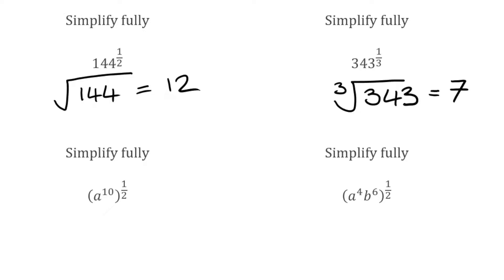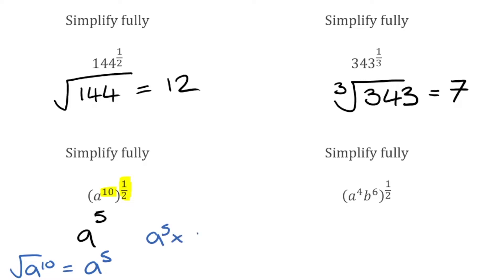For the next question, we have a to the power of 10, raised to the power of a half, which means the square root of a to the power of 10. This links back to our laws of indices — when we have a power raised to another power, we multiply the indices. So 10 multiplied by a half gives us five, meaning the answer is a to the power of five. That makes sense because a^5 times a^5 gives a^10.